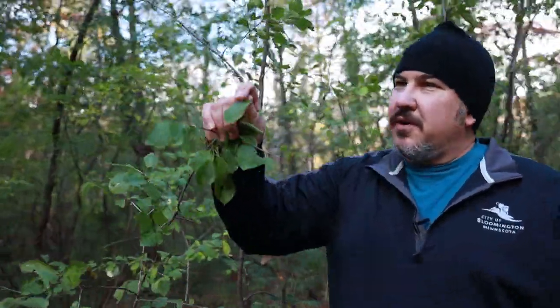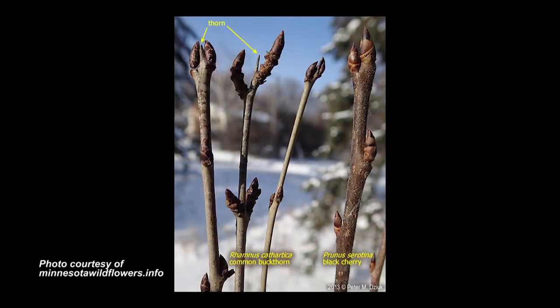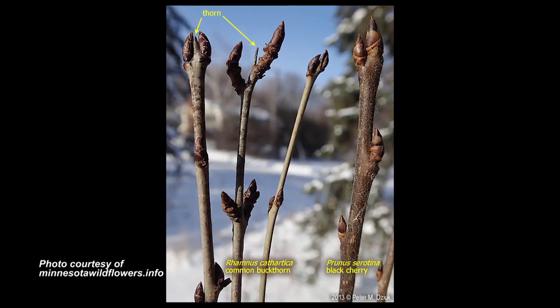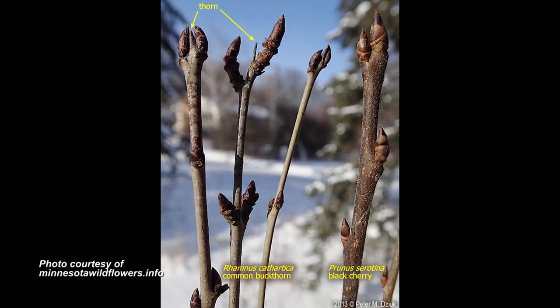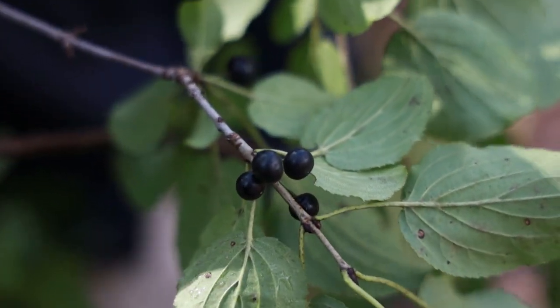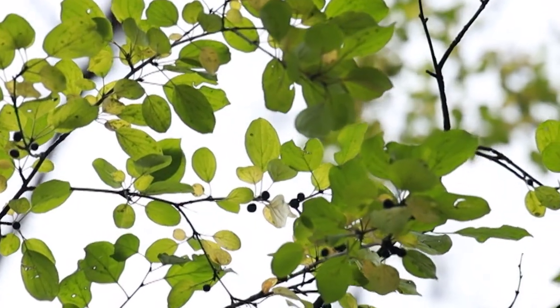To identify buckthorn, the only thorns are on the terminal ends of the buds — you can see a small tip there, that's the thorn. Only female trees produce berries that birds eat, and those berries give them diarrhea. They immediately spread the seeds around the forest floor, so it quickly spreads. People should also not eat buckthorn berries for the same reason.